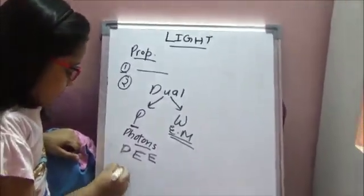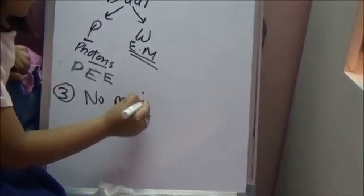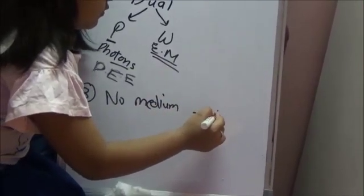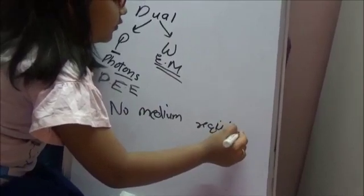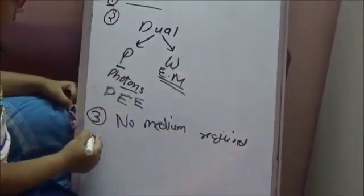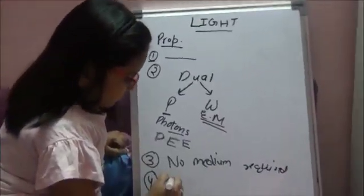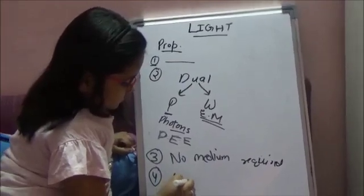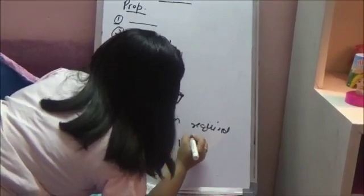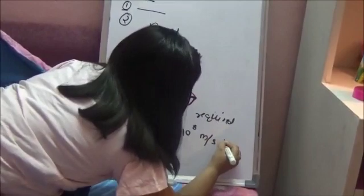So light waves do not require a medium to travel, and this brings us to the third property: no medium required for travelling. The fourth and last property is about the speed of light. The speed of light in vacuum is 3 × 10⁸ meters per second.